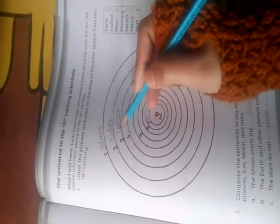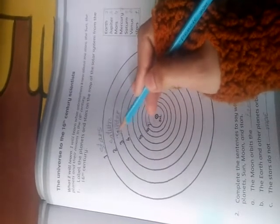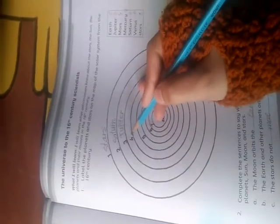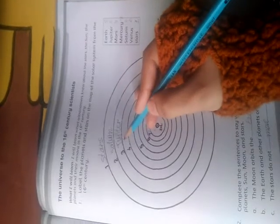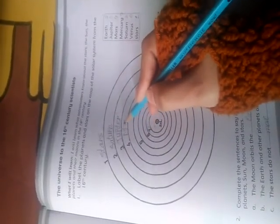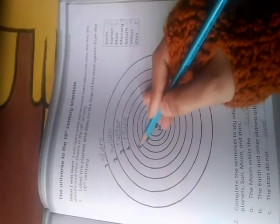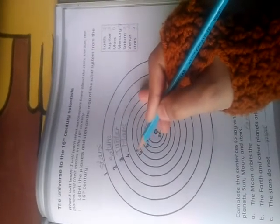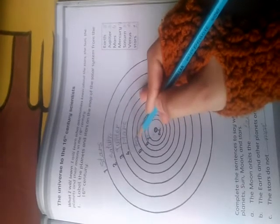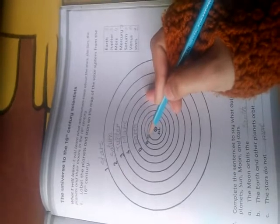और सब planets की जो first letter होंगे वो capital होंगे. First letter should be capital of each planet. In 4th we have to write Mars. M-A-R-S Mars. On 5th we have to write the planet Earth. E-A-R-T-H Earth.